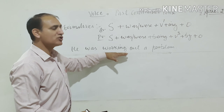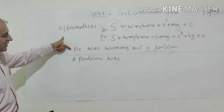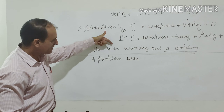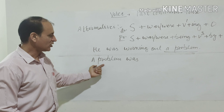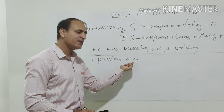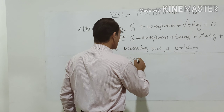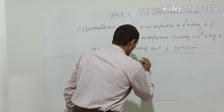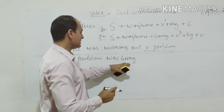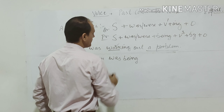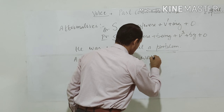We bring the object to the front: 'a problem'. Since this is continuous tense, the helping verb will be 'was'. In the active voice the subject 'he' is third person singular, so we use the singular form of the helping verb. The passive subject is also singular. Before the third form of the verb, we use 'being' because it is continuous tense.